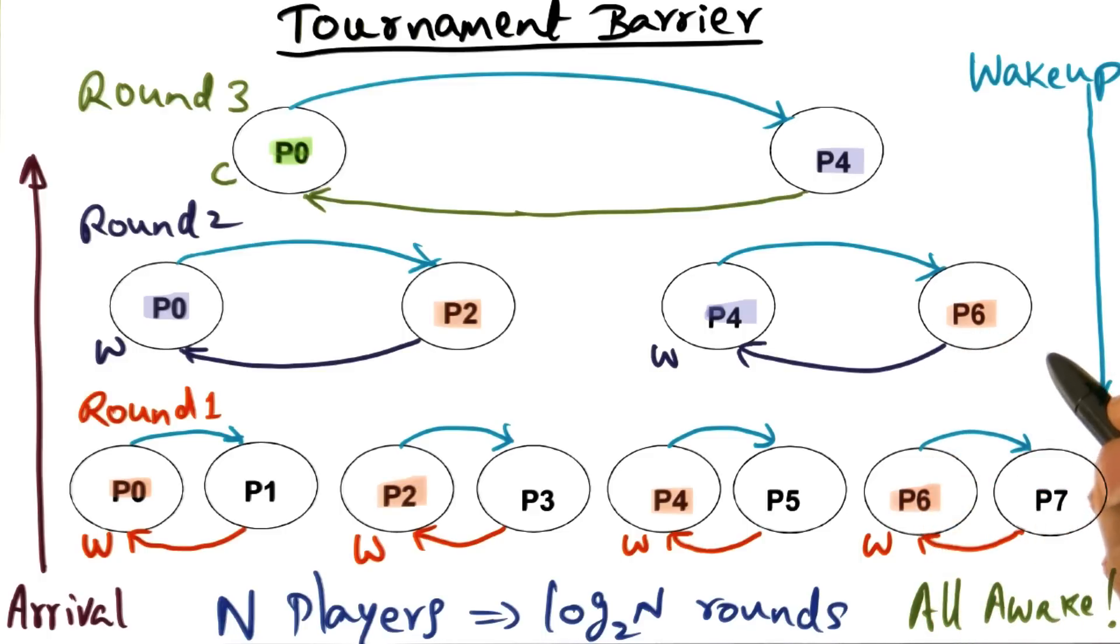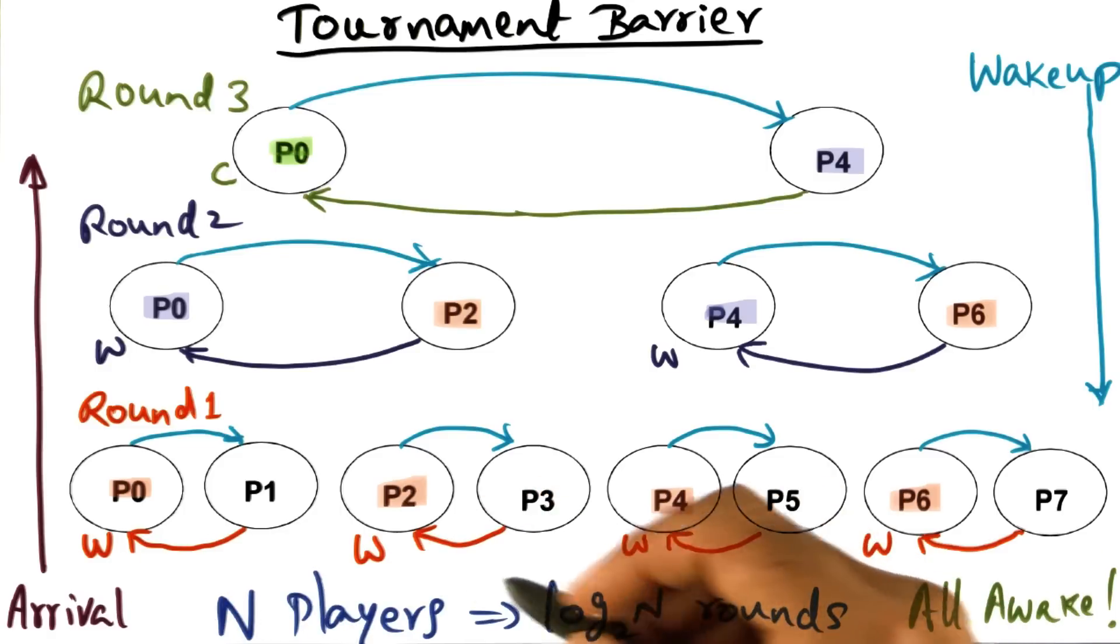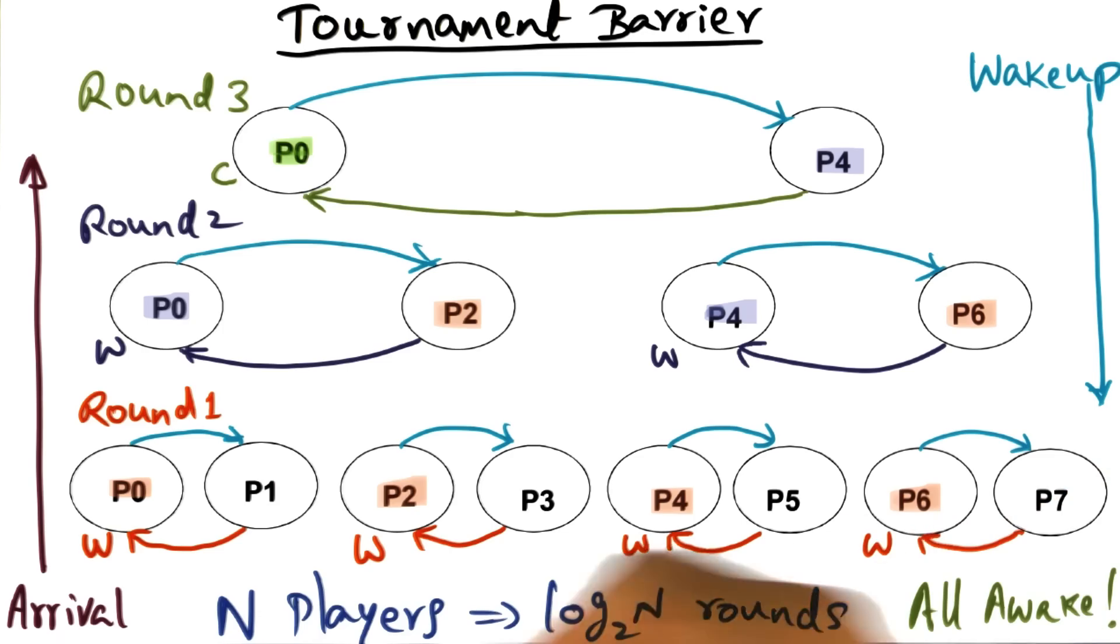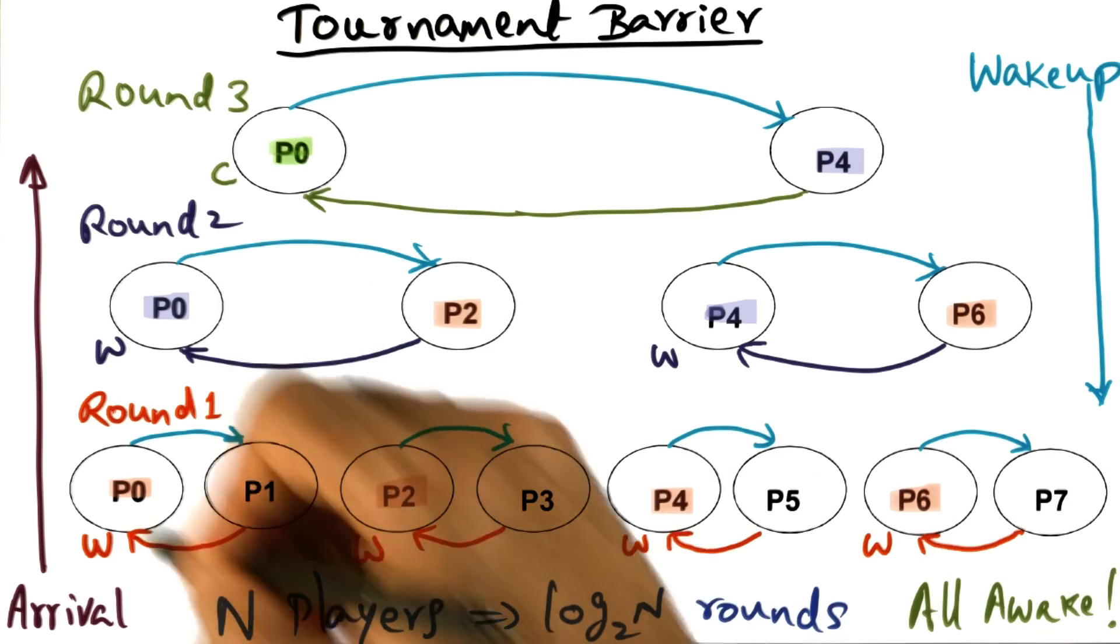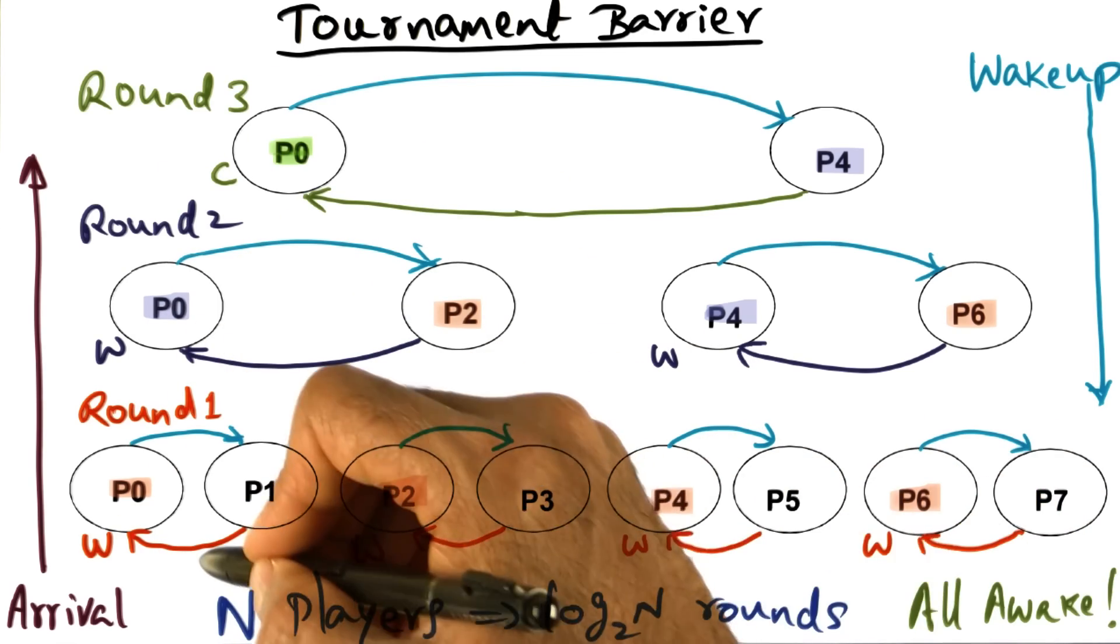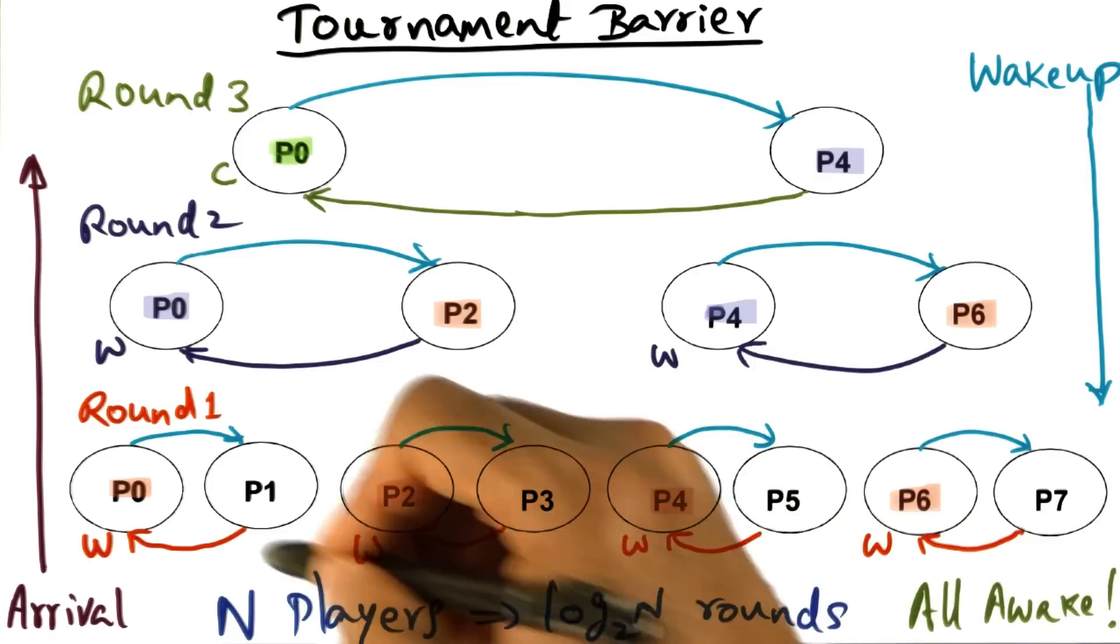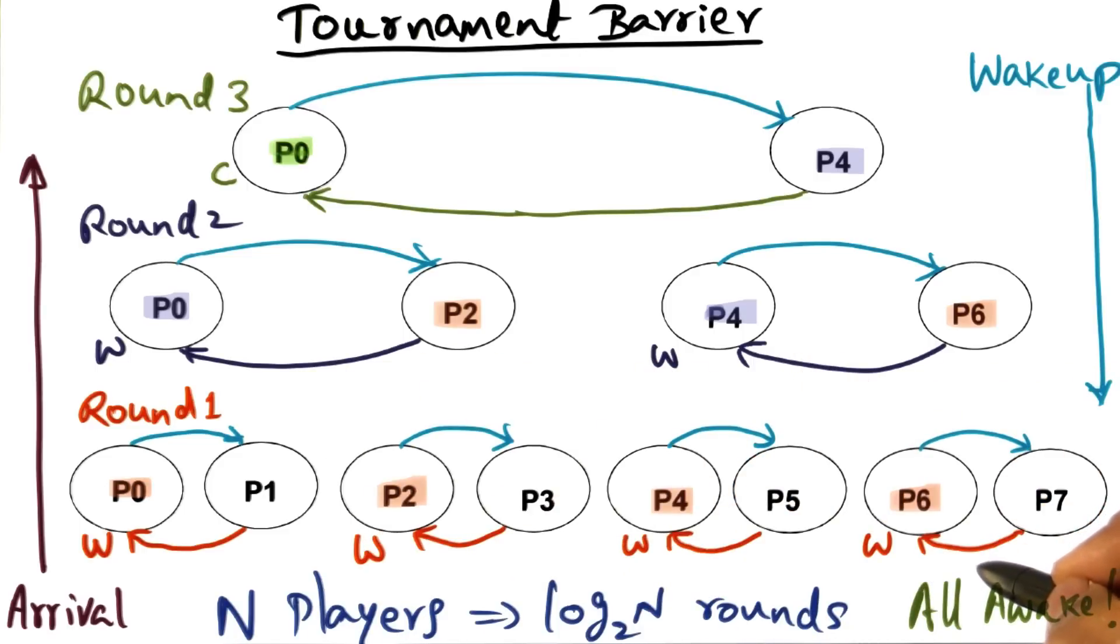Now the other important thing I should mention is that at every round of the tournament, you can see that there is quite a bit of communication happening. In the first round, going up the tree, P1 is communicating with P0, P3 with P2 and so on. All of these red arrows are parallel communication that can potentially take advantage of any inherent parallelism that exists in the interconnection network. That can be exploited.